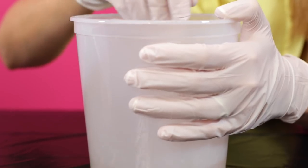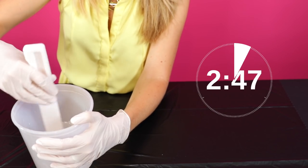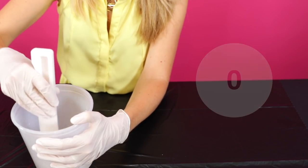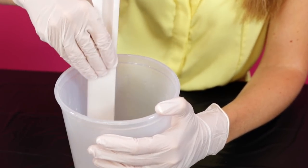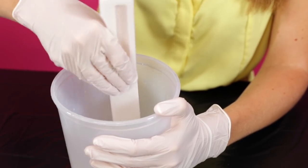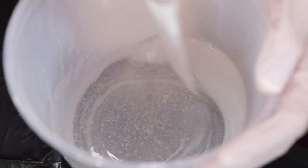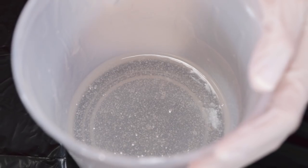Stir your resin and hardener mixture thoroughly for at least three full minutes. You'll want to scrape along the sides and bottom of the container as you stir to ensure the entire mixture will catalyze properly and therefore cure as expected. If you see bubbles forming during this step, don't worry, we'll take care of them.